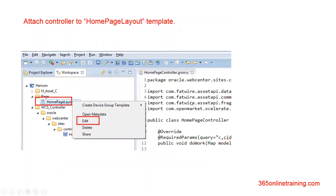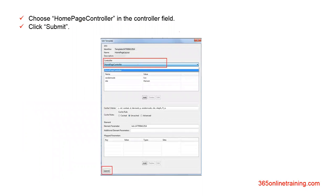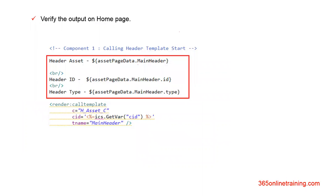After that, go to Eclipse again and right click on your template and click Edit. A popup box will open, which has a controller section where the controller would be listed. Choose your newly created controller and click Submit. Then open the template and add the following code. The assetPageData is the variable name we used in our controller. Since the name of our attribute is mainHeader, that's where we would use it to get the header ID. Note that assetPageData.mainHeader would return the complete assetID. If you want only the ID, you can append .id to the variable, and if you want the type, you can append .type.